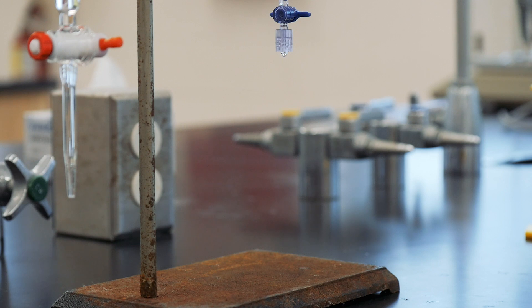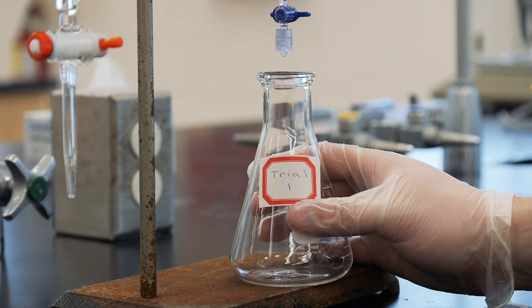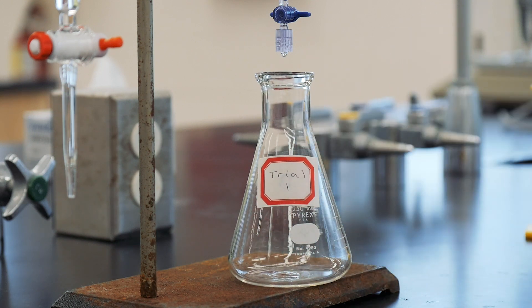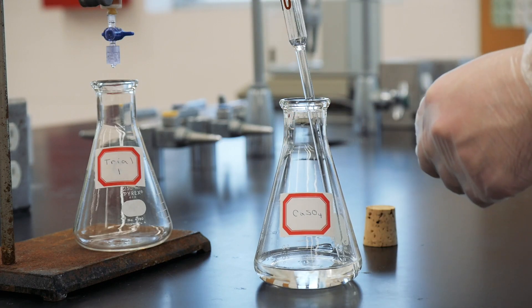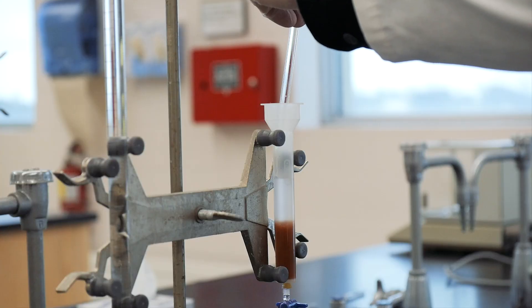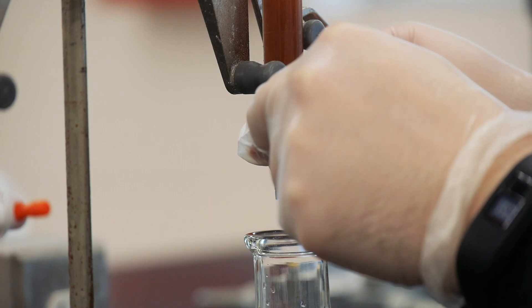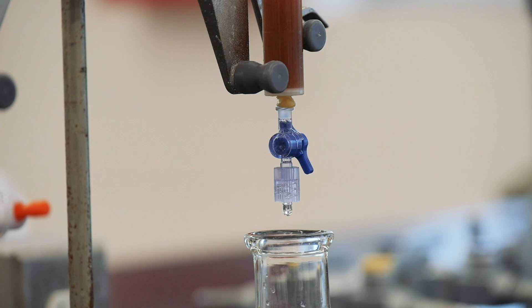Now that everything is set, we're ready to begin, so place a clean 250 mil Erlenmeyer flask beneath the column. Pipette 10 mils of your saturated calcium sulfate solution slowly onto the column. Collect it in your Erlenmeyer flask at a rate of about one drop per second.